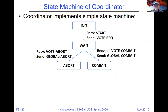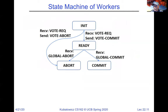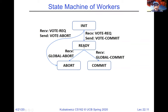You can view this as a state machine on both the coordinator and the workers. The coordinator has four states, starting in init. When ready to start, it sends a vote request and waits. If it hears vote commit from everybody, it goes forward; if it hears vote abort from anybody, it sends a global abort. A worker also starts in init. If it hears a vote request and wants to commit, it goes to the ready state and waits. If a worker misses a global commit — for example, crashes and comes back up — it can poll the coordinator to find out the decision.